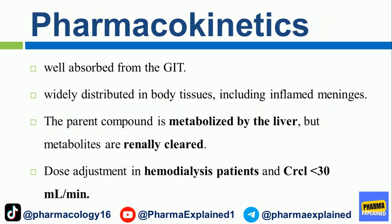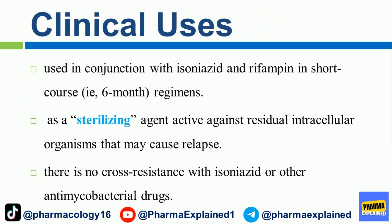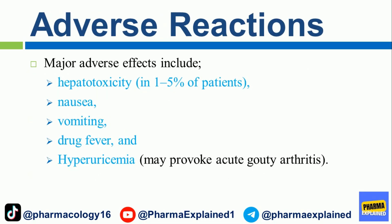Pharmacokinetics: Well absorbed from the gut and widely distributed in body tissues, including inflamed meninges. The parent compound is metabolized by the liver, but metabolites are renally cleared; dose adjustment is needed in hemodialysis patients and when CrCl is less than 30 mL/min. Clinical uses: Used in conjunction with isoniazid and rifampin in short-course six-month regimens as a sterilizing agent active against residual intracellular organisms that may cause relapse. There is no cross-resistance with isoniazid or other antimycobacterial drugs.